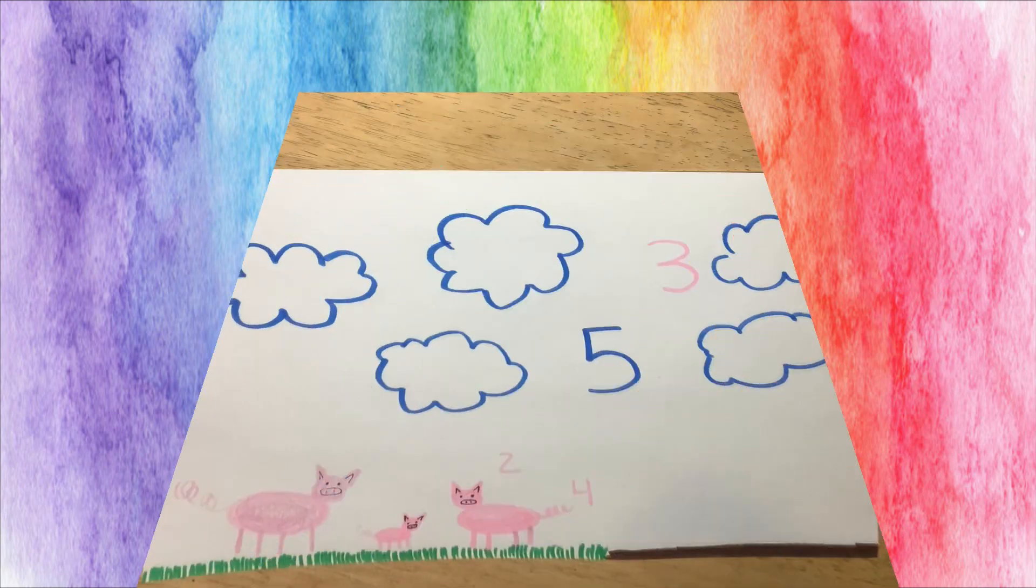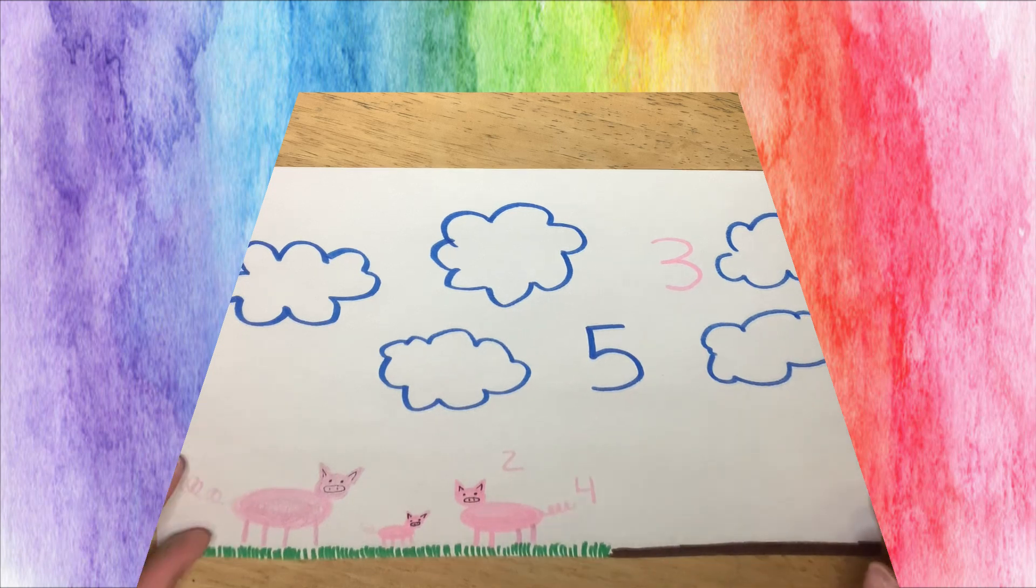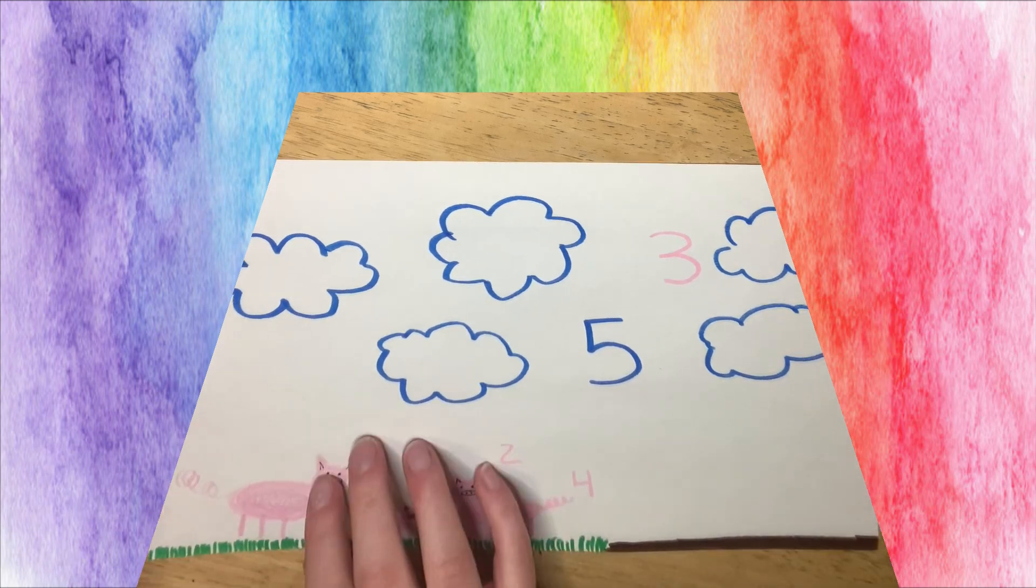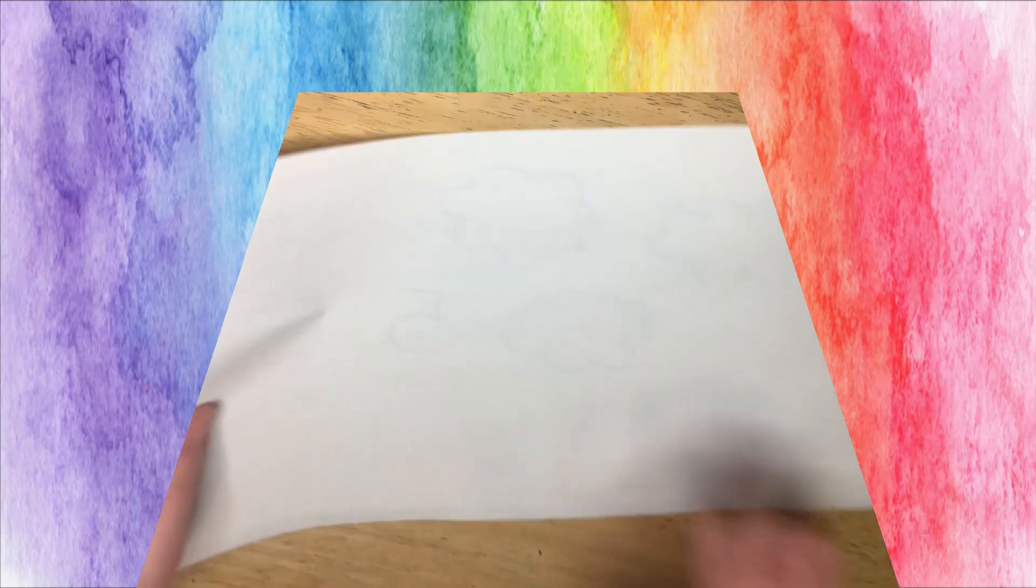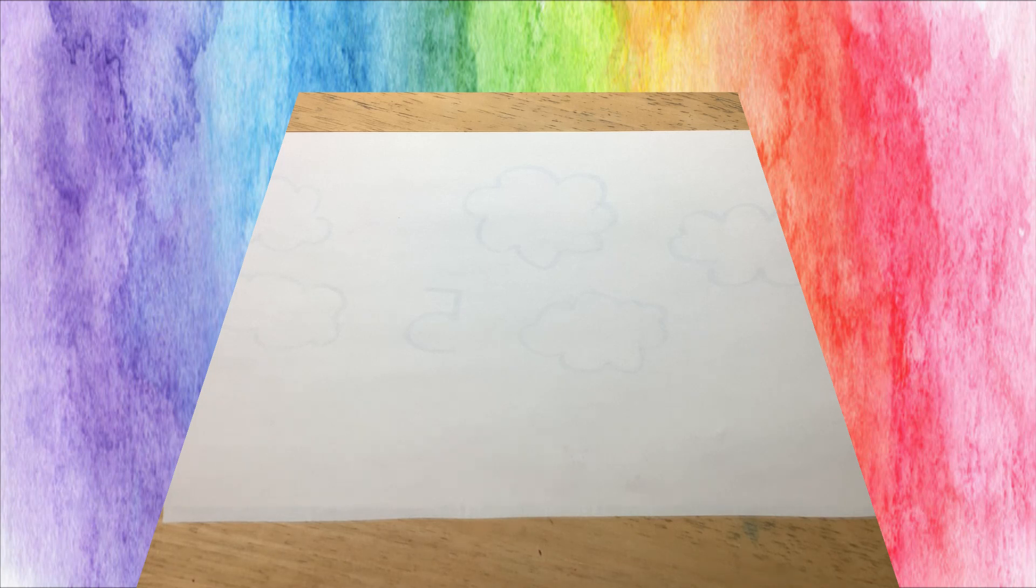Now it's time for our artist statement. So grab a pencil or a pen to write with. And we're going to write a sentence. Now, we are going to flip our paper over. And we're going to write our artist statement. This is a sentence about our picture.